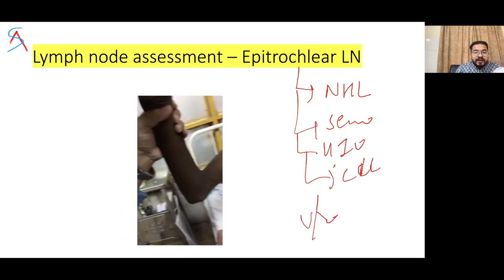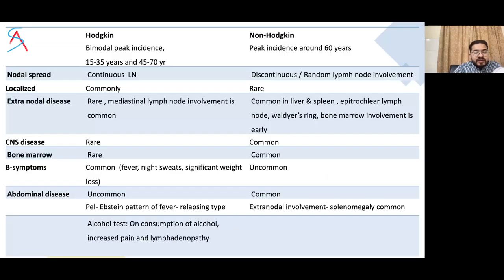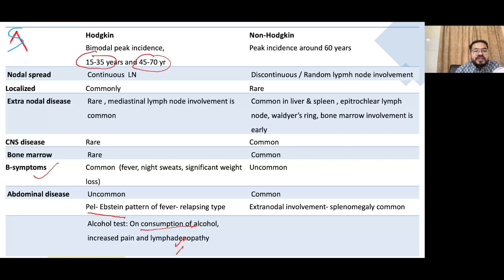Unilateral epitrochlear lymph node enlargement does not have much clinical significance. Key differences between Hodgkin's and non-Hodgkin's lymphoma: Hodgkin's has B symptoms — fever, night sweats, significant weight loss — and Pel-Ebstein type relapsing fever; alcohol consumption causes increased pain and lymphadenopathy; bimodal peak age distribution. Non-Hodgkin's is more common in older patients, with common involvement of liver, spleen, epitrochlear lymph nodes, Waldeyer's ring, and early bone marrow involvement.